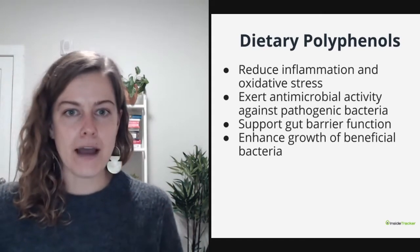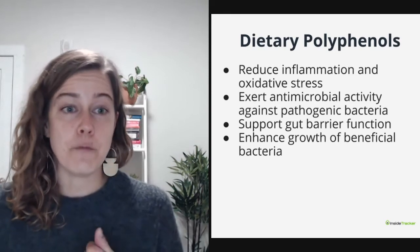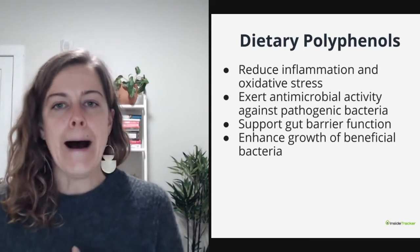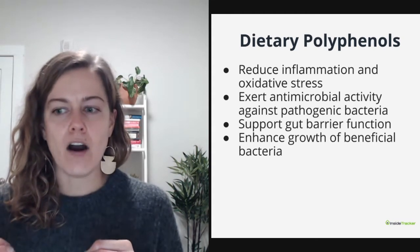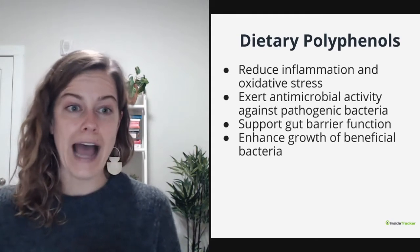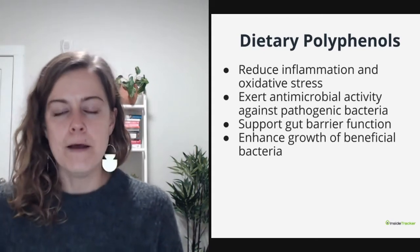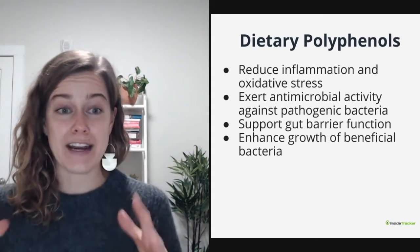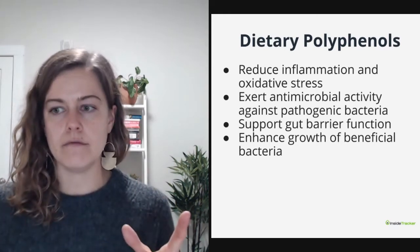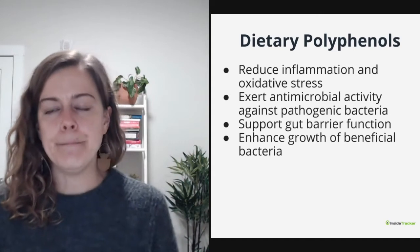These plant compounds can actually reduce inflammation and oxidative stress in a significant way. Foods that are particularly high in polyphenols actually have antimicrobial actions, so they can help prevent pathogenic or bad bacteria from taking over and overgrowing in our guts.